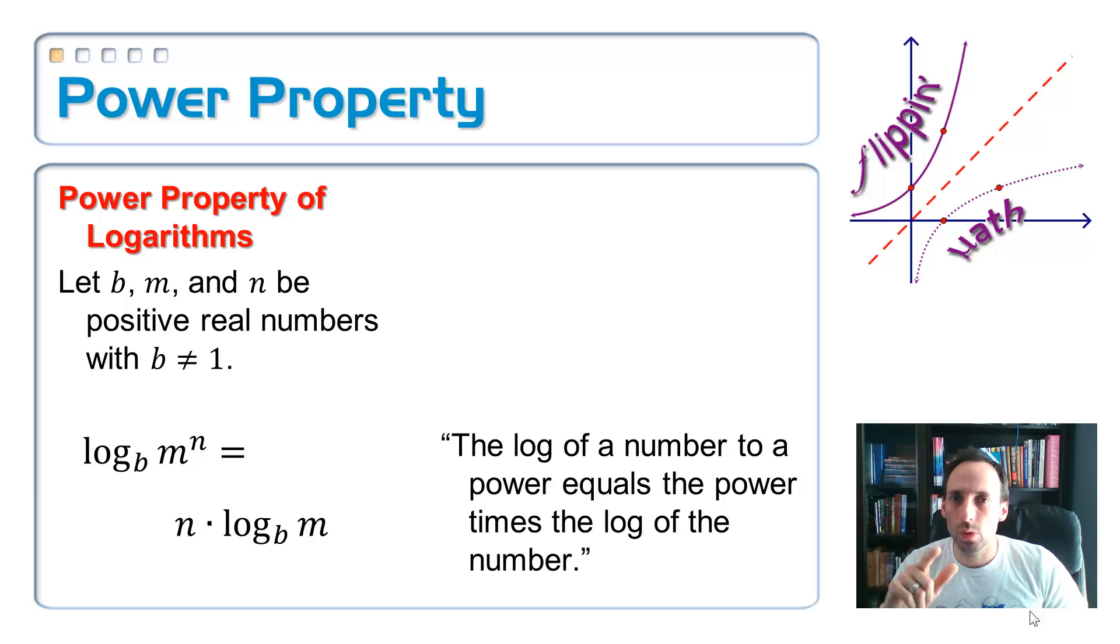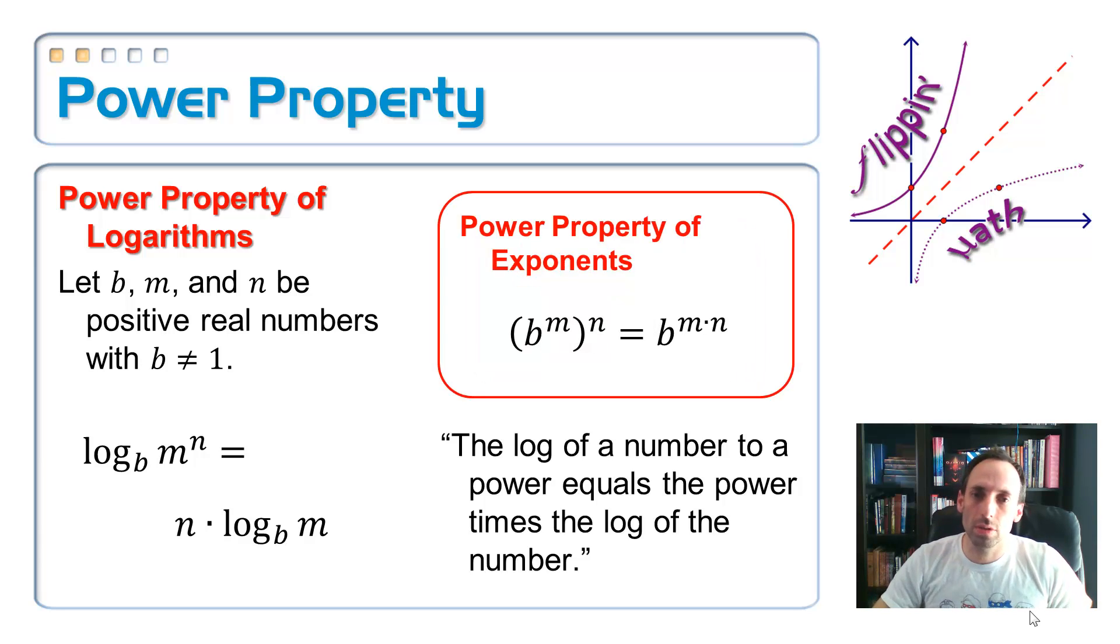And then we have one more. We've got the power property of logarithms. So remind me, whenever you take a power and raise it to another power, what are you supposed to do with those exponents? Let's look at the property. So the log base B of M raised to the N power is equal to N times the log base B of M. You're multiplying, and the reason why you're multiplying is because a power raised to a power is multiplication. So B to the M to the N is equal to the B to the MN. You multiply the exponents together. So let's apply that right here.